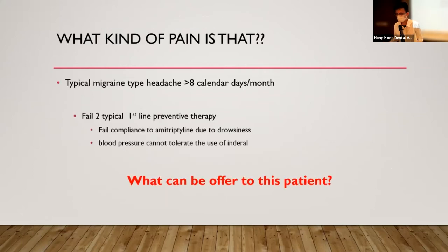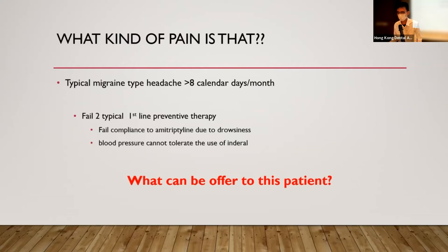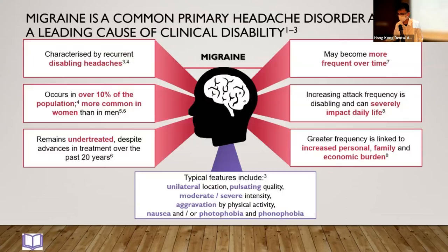This kind of pain is typical of migraine, affecting more than 10 days per month. I tried to start her on primary prevention therapy, but unfortunately she failed first-line preventive therapy — she failed amitriptyline due to drowsiness affecting studying, and she could not tolerate inderal, one of the first-line preventive treatments for migraine, due to low blood pressure. So what can be offered to this patient?